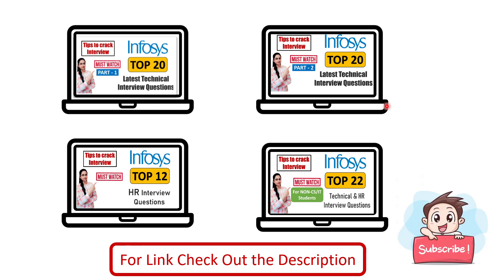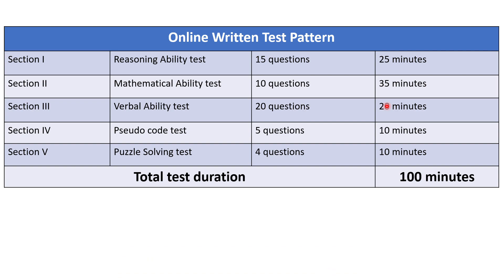Now let's talk about the first round which is online written test. This is the test pattern for the online test. In this test, you will find five sections. First is reasoning ability test which has 15 questions that you have to solve in 25 minutes. Second section is mathematical ability which consists of 10 questions in 35 minutes. Third section is verbal ability test 20 questions in 20 minutes. Fourth section is pseudocode test 5 questions 10 minutes. And the last section is puzzle solving test 4 questions in 10 minutes. So total 54 questions you have to complete in 100 minutes. And there is one important point is that there will be no negative marking for any question.